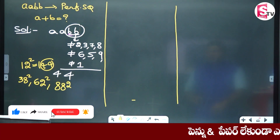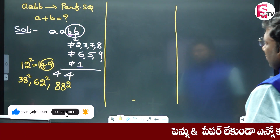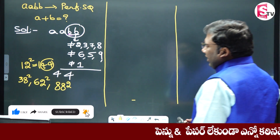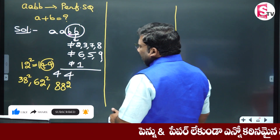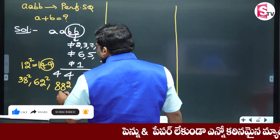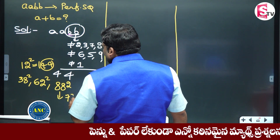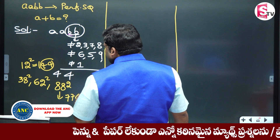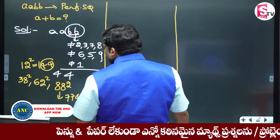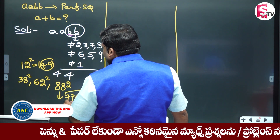38 square, 62 square, 88 square, 89 square, 99 square. My answer is 7744.